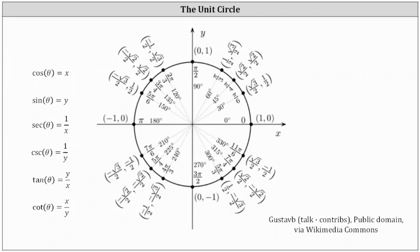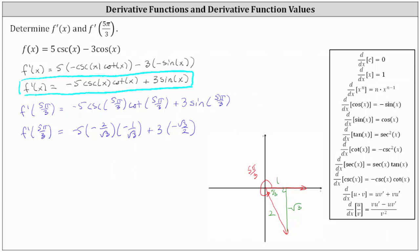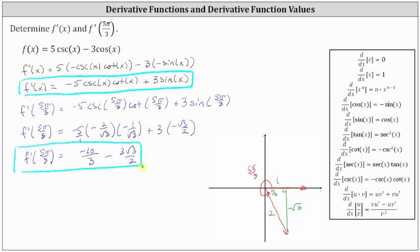Going back to our work, let's find the exact derivative function value. We have f prime of five pi divided by three — thinking of negative five as negative five over one — in the numerator we have negative five times negative two times negative one, which is negative ten, and in the denominator we have square root three times square root three, which is three. Then we have plus three times negative square root three divided by two, which gives minus three square root three divided by two. So the exact derivative function value is negative ten-thirds minus three square root three divided by two.